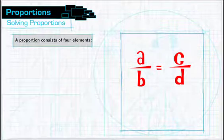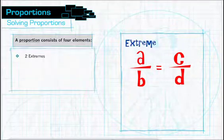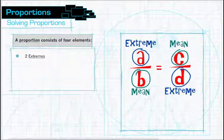A proportion consists of four elements. Two of the elements are known as extremes, and two are known as means.